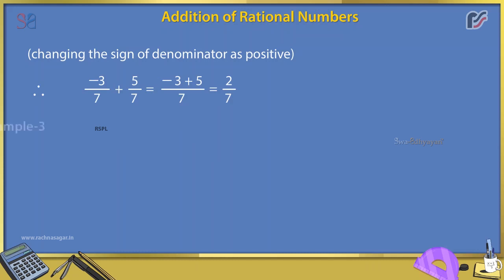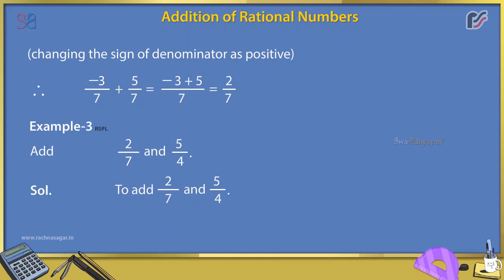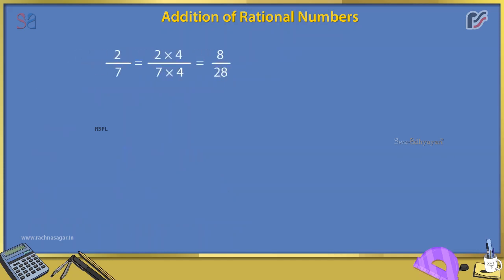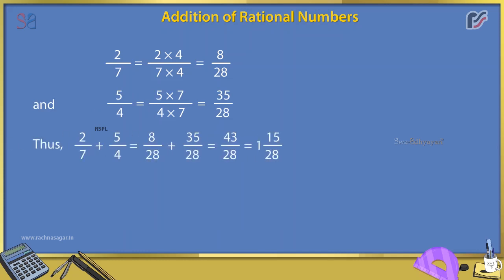Example 3: Add 2/7 and 5/4. Solution: To add 2/7 and 5/4, first find the LCM of 7 and 4, which is 28. 2/7 = (2 × 4)/(7 × 4) = 8/28. And 5/4 = (5 × 7)/(4 × 7) = 35/28.